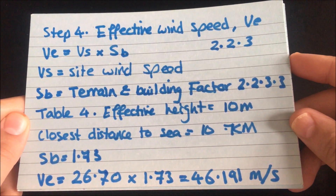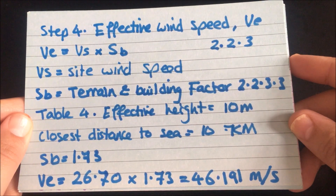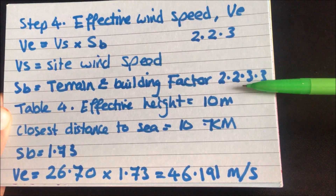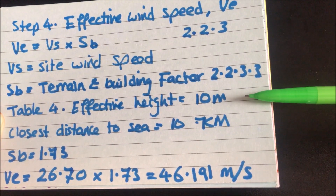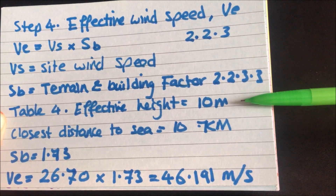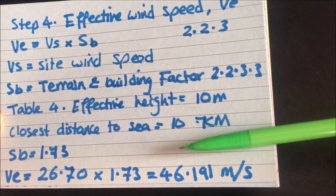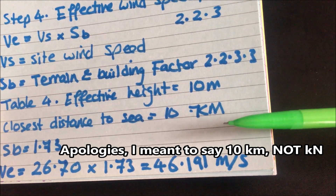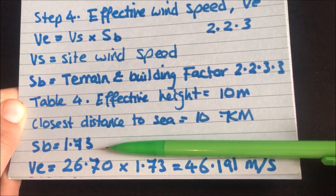So for step four, the next step is to work out the effective wind speed VE, where VE equals VS times SB. SB is the terrain and building factor, found under section 2.2.3.3. We look at table 4 and we know our portal frame height is 7.35 meters, so we use the 10-meter category as the closest available. The closest distance to the sea is 10 kilometers, and using table 4 the terrain and building factor SB is determined to be 1.73.